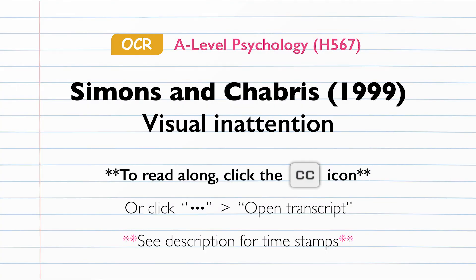Simons and Chabris's 1999 Visual Inattention Background. Inattentional blindness, also known as change blindness, is a phenomenon where an observer often fails to perceive an unexpected object or event, even if it appears in the area that the observer is observing, if their attention is focused on another object or task, or the object is not the centre of interest in the scene.